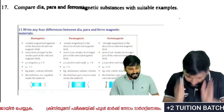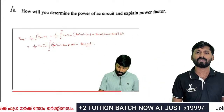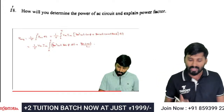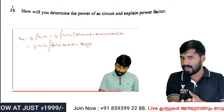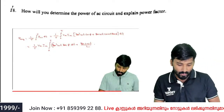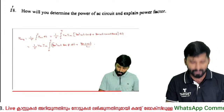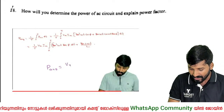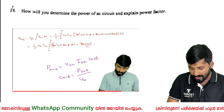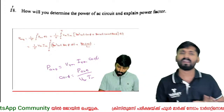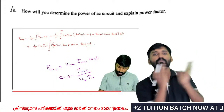Explain power factor. The average power is P_avg = V_rms × I_rms × cos φ. The power factor is cos φ, which is the ratio between true power and apparent power. True power equals V_rms × I_rms × cos φ, and apparent power equals V_rms × I_rms.